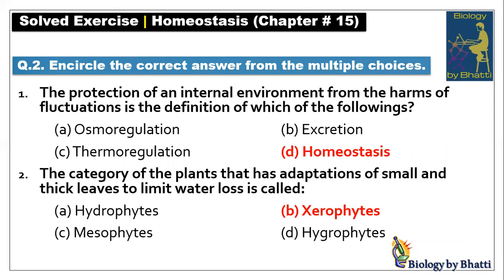MCQ number two: the category of plants that has adaptations of small and thick leaves to limit water loss is called — these are xerophytes. The answer is B option.